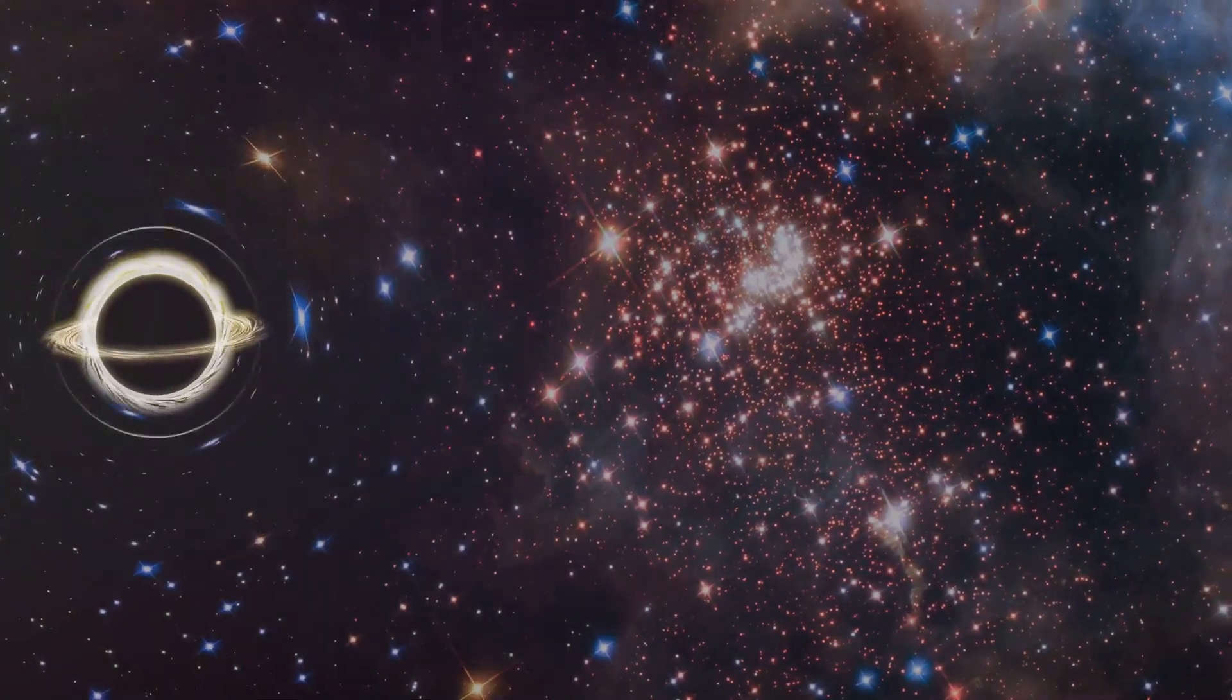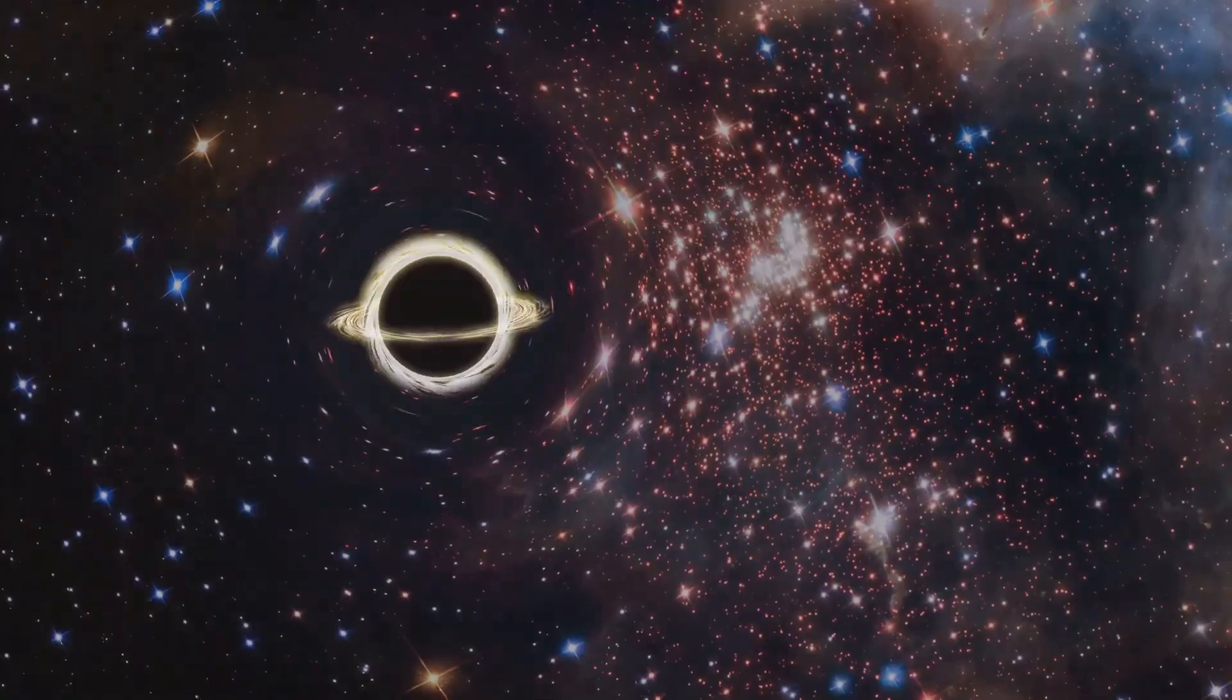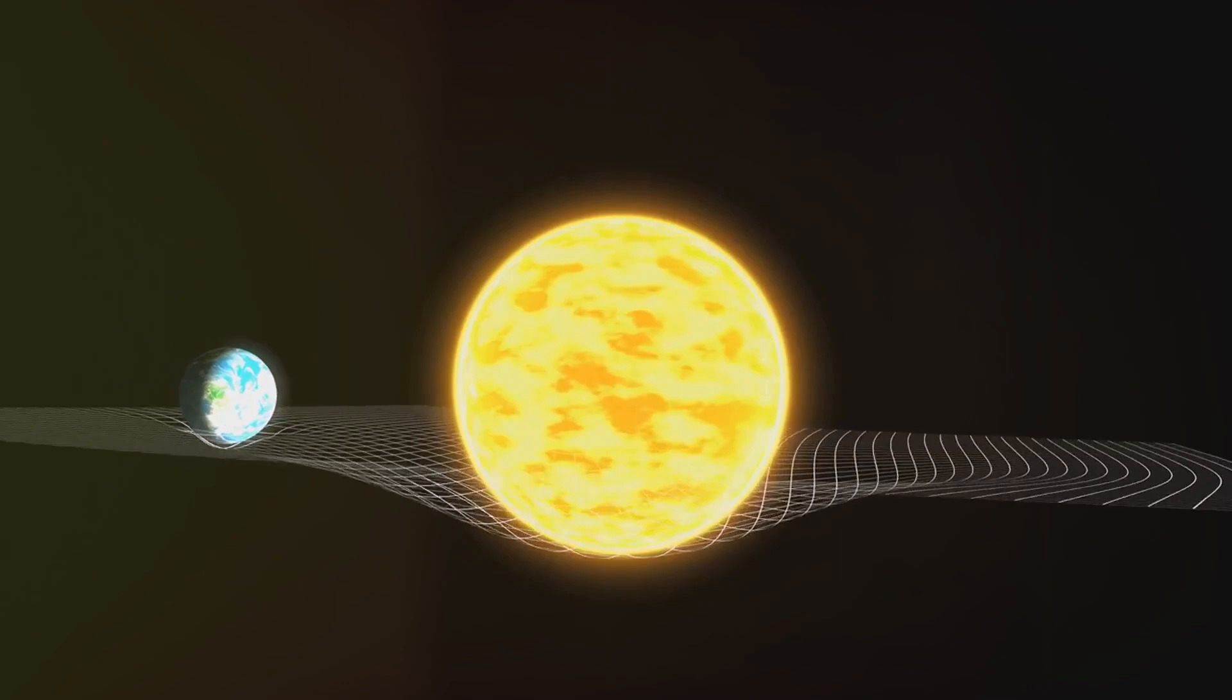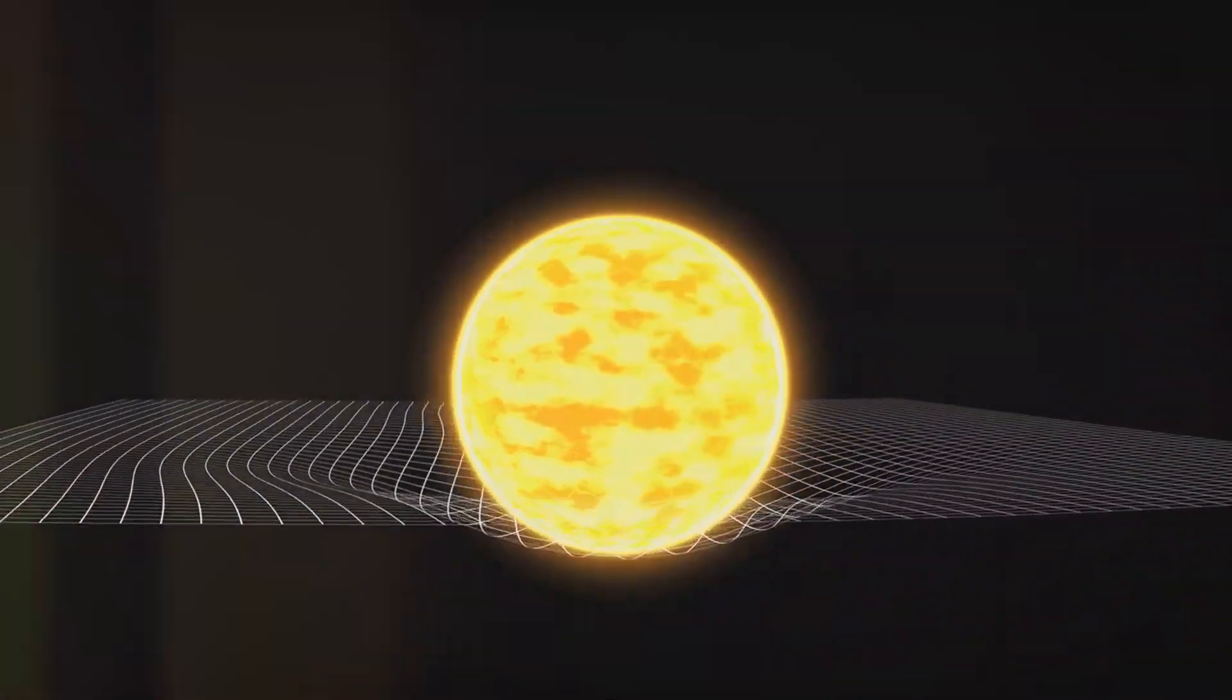Dark matter is a mysterious substance that doesn't emit, absorb, or reflect light. It's invisible to our telescopes. We can't see it directly, but we know it's out there because of its gravitational effects on visible matter.